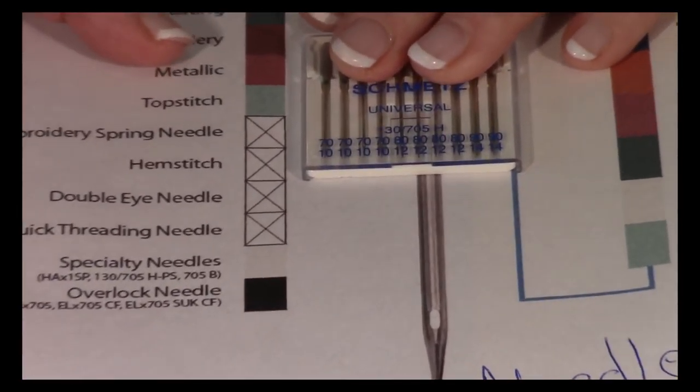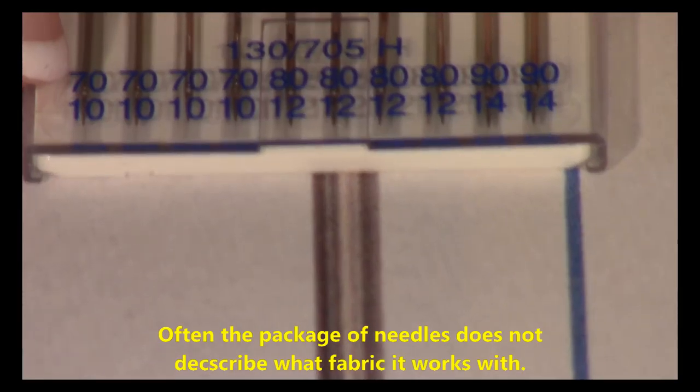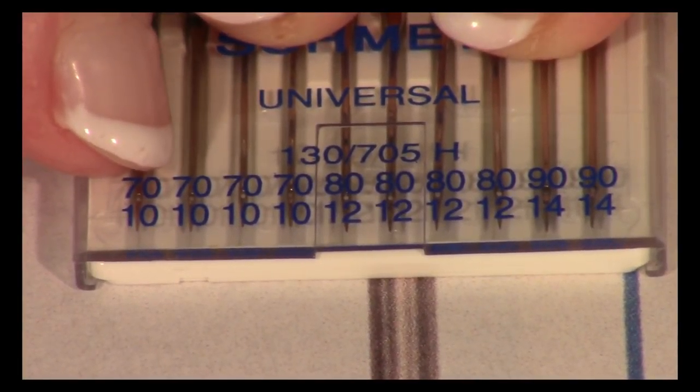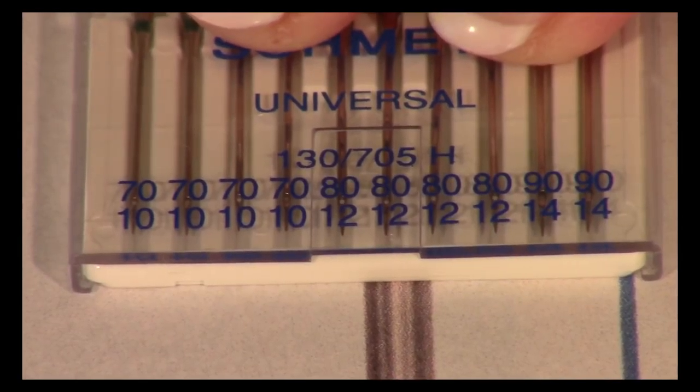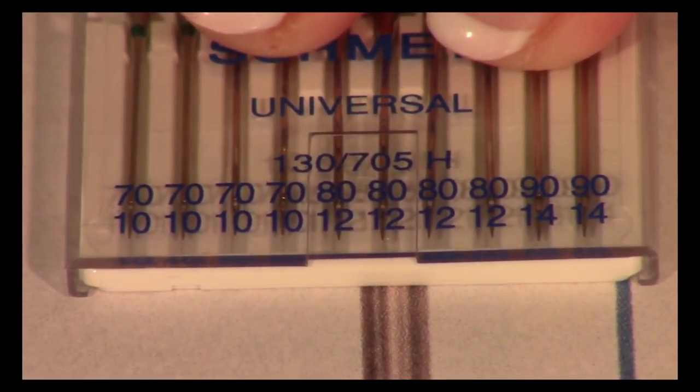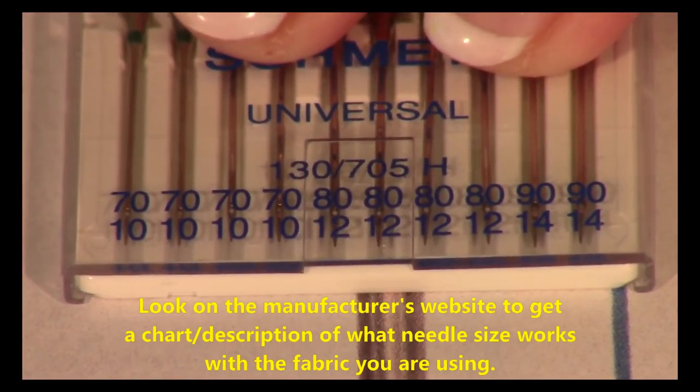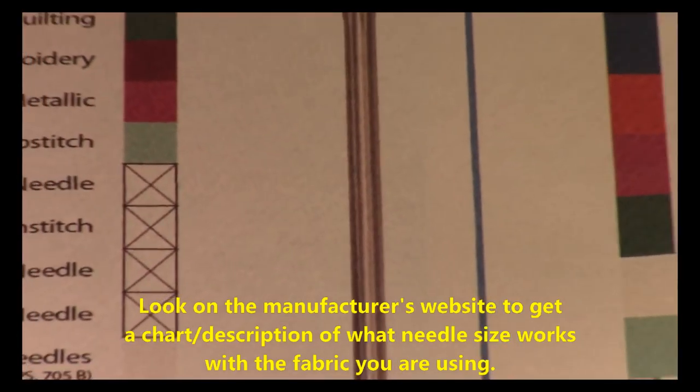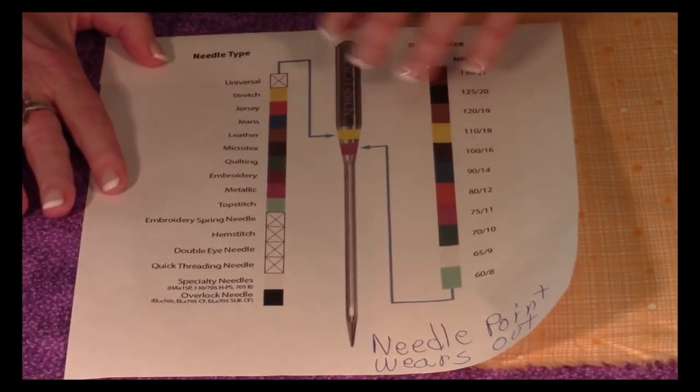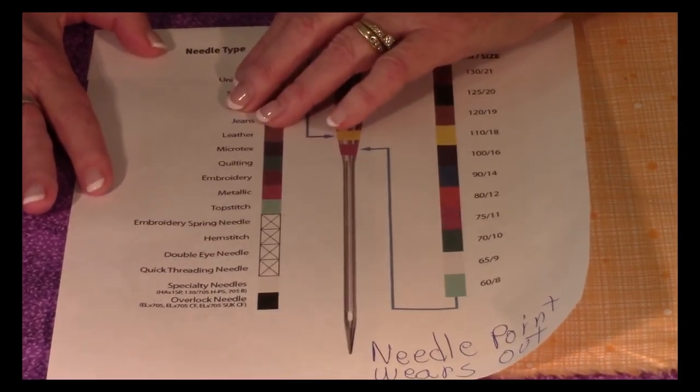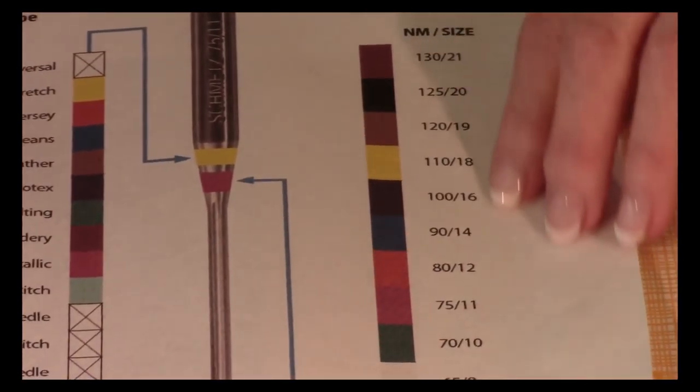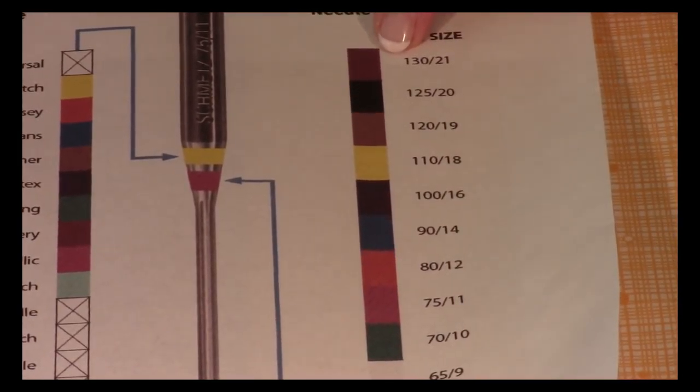So let's look at this package of needles right here. The problem with this package is down here where the little numbers are, that tells you the size. But if you don't know what those numbers mean, you're not going to be using the correct needle. You won't know which one to use. And it's very confusing because there's dozens of sizes of needles out there. So what I did was I went to the manufacturer's website. There was this chart on there and I printed it out because it's all color-coded and it tells you here's the fabric over here and over here is the size. And in the United States, we use these last two numbers here, this outer set of numbers. And then this is the metric system over here.